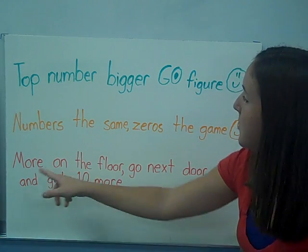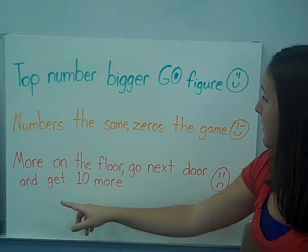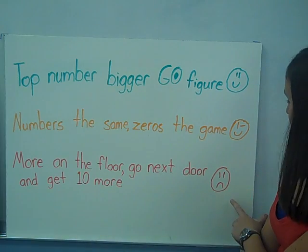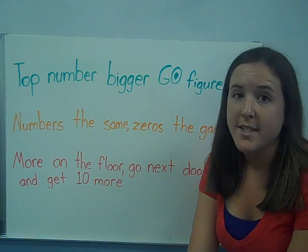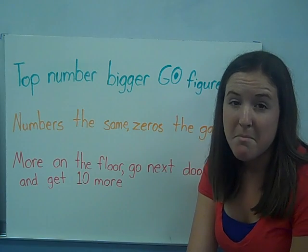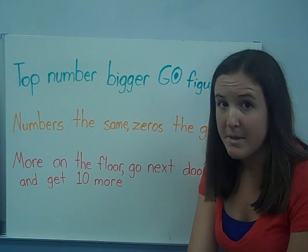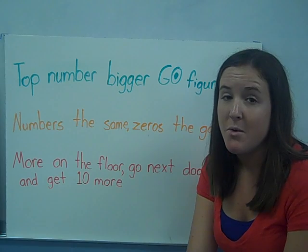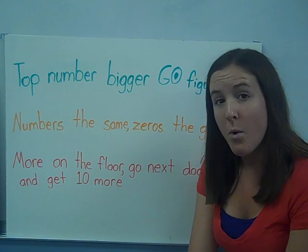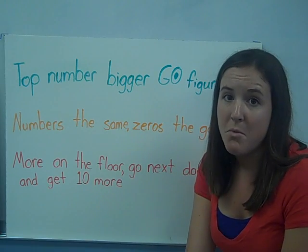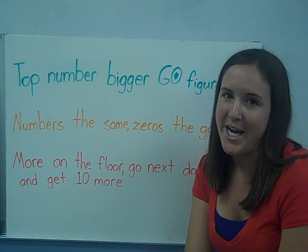And finally, more on the floor, go next door and get ten more, with a frown face. If the top number is smaller than the bottom number and that bottom number is bigger, you cannot subtract. You have to go next door to the tens or hundreds and get more from them in order to subtract.